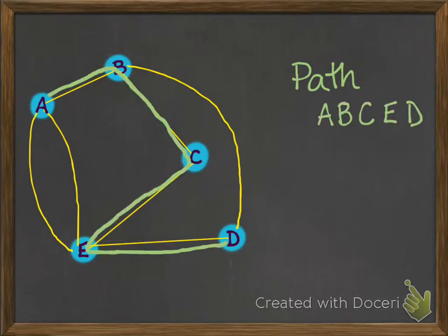For example, that one there is the path A, B, C, E, D — because you visit the nodes in that order. So you write down your path in terms of the nodes in the order that they get visited in.